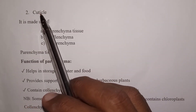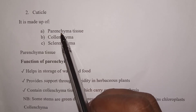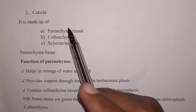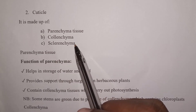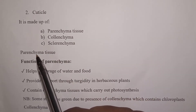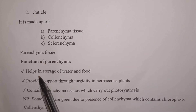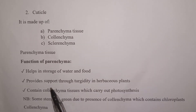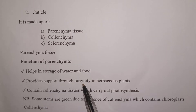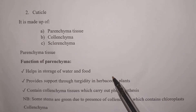Number two, the cortex: this is made up of three tissues — parenchyma, collenchyma, and sclerenchyma. Under parenchyma tissue, the function is storage of water and food, and it provides support through turgidity in herbaceous plants — plants with weak stems.